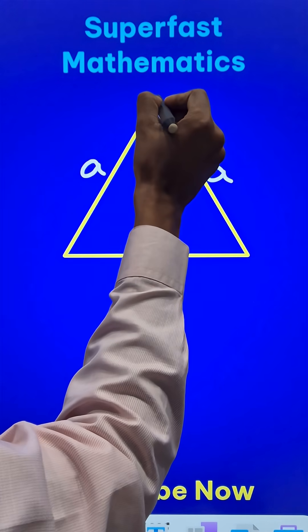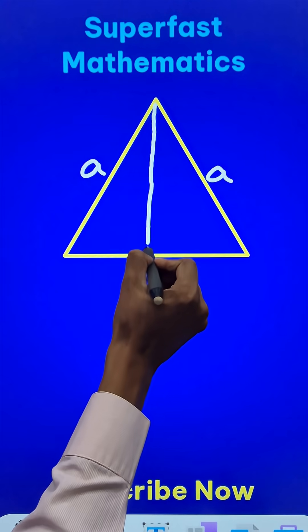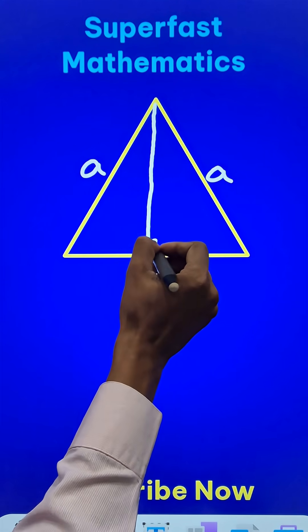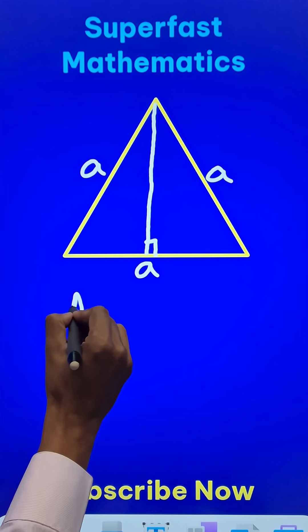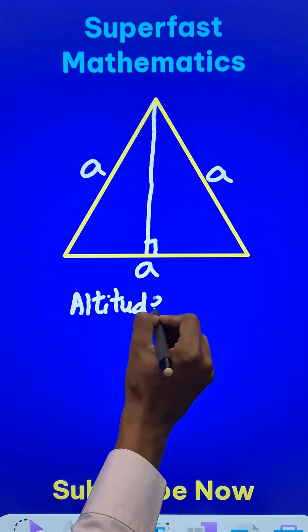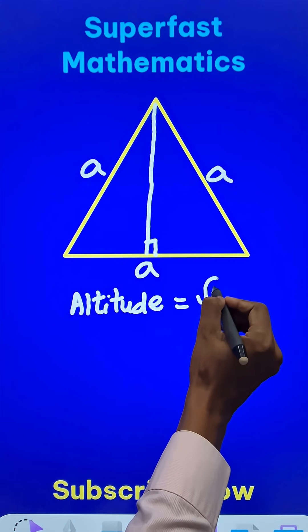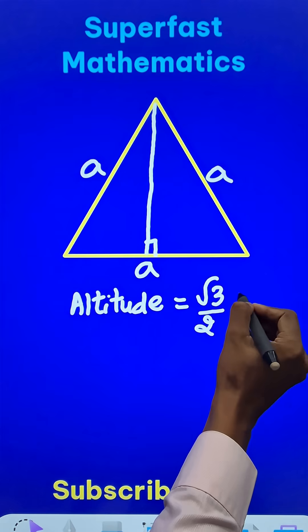Now, from this vertex, if I draw a perpendicular, this is the altitude. The altitude of the equilateral triangle is given by √3/2 times the side of the equilateral triangle.